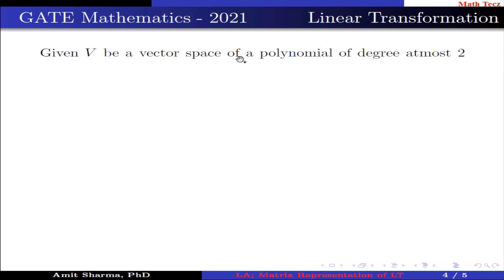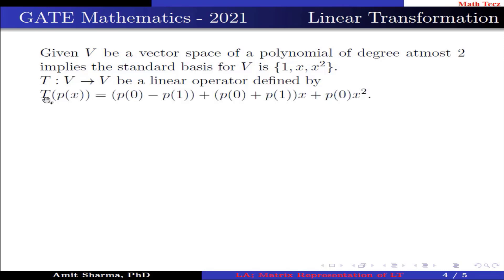Given V be a vector space of polynomials of degree at most 2, this implies the standard basis for V is {1, x, x²}. T: V → V be a linear operator defined by T(p(x)) = (p(0) - p(1)) + (p(0) + p(1))x + p(0)x².